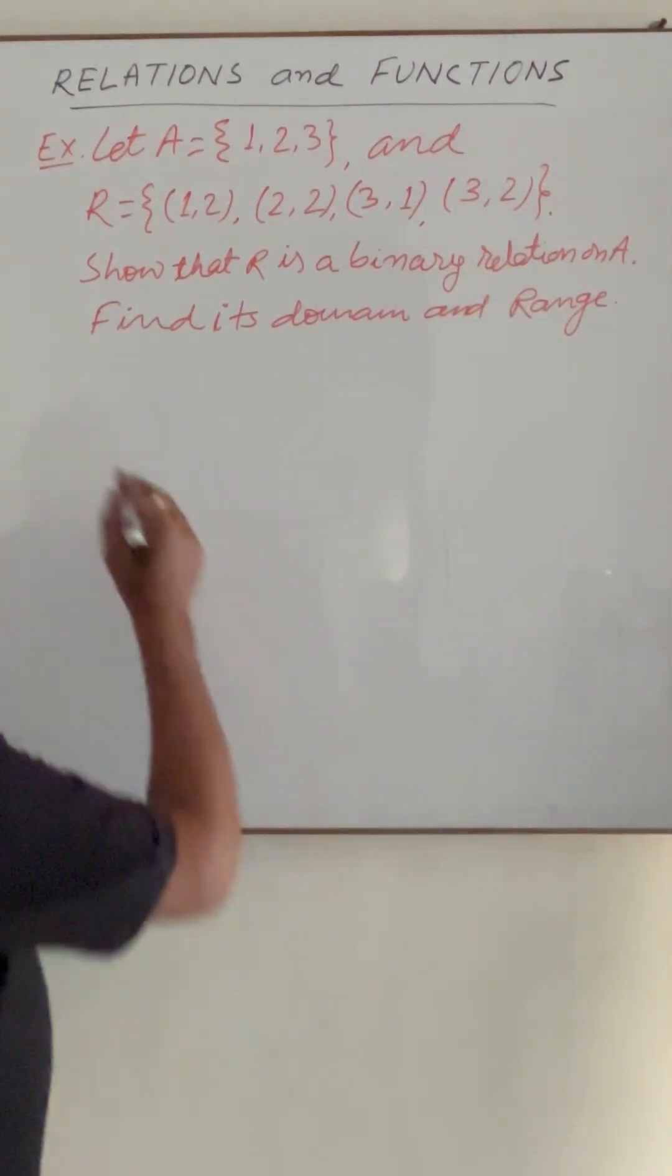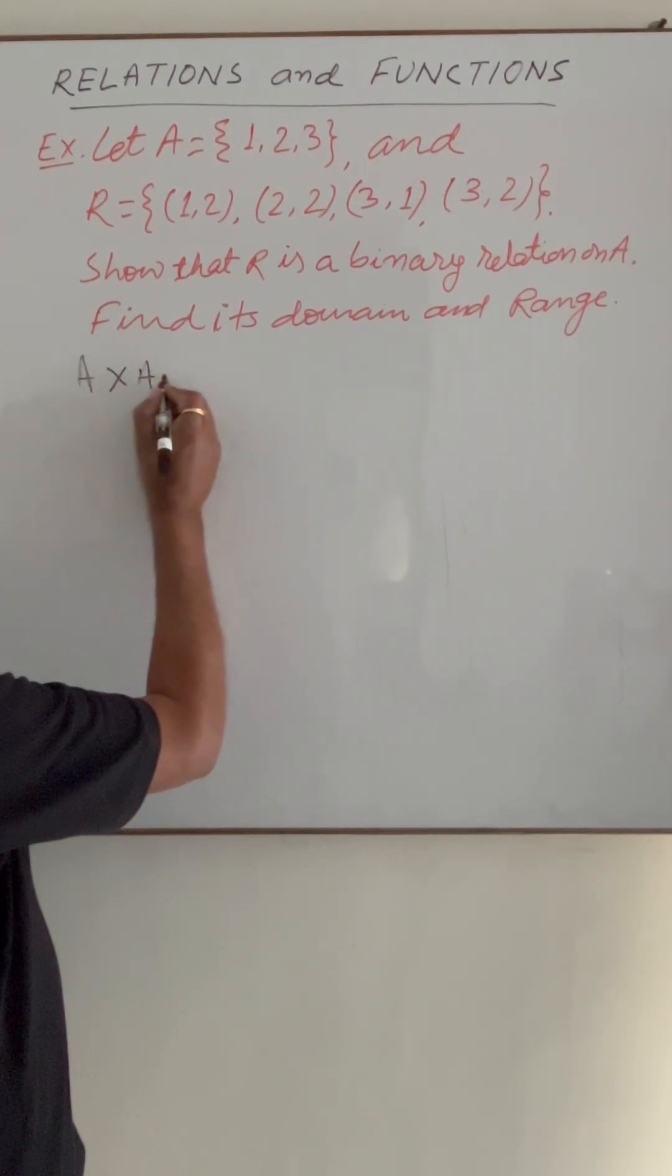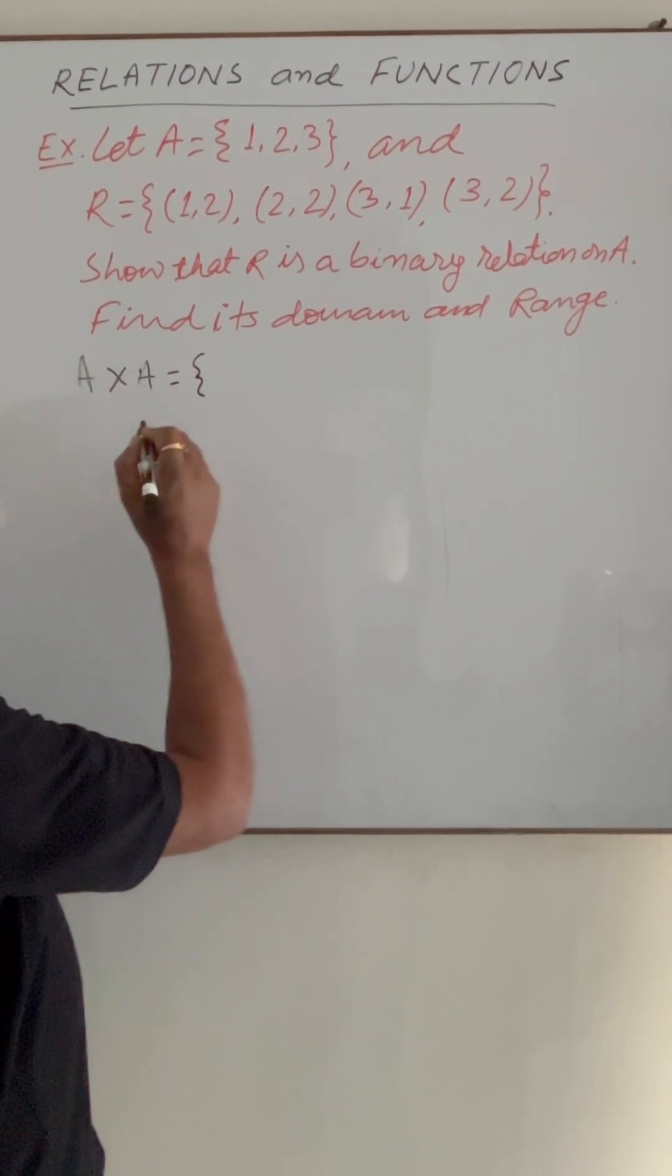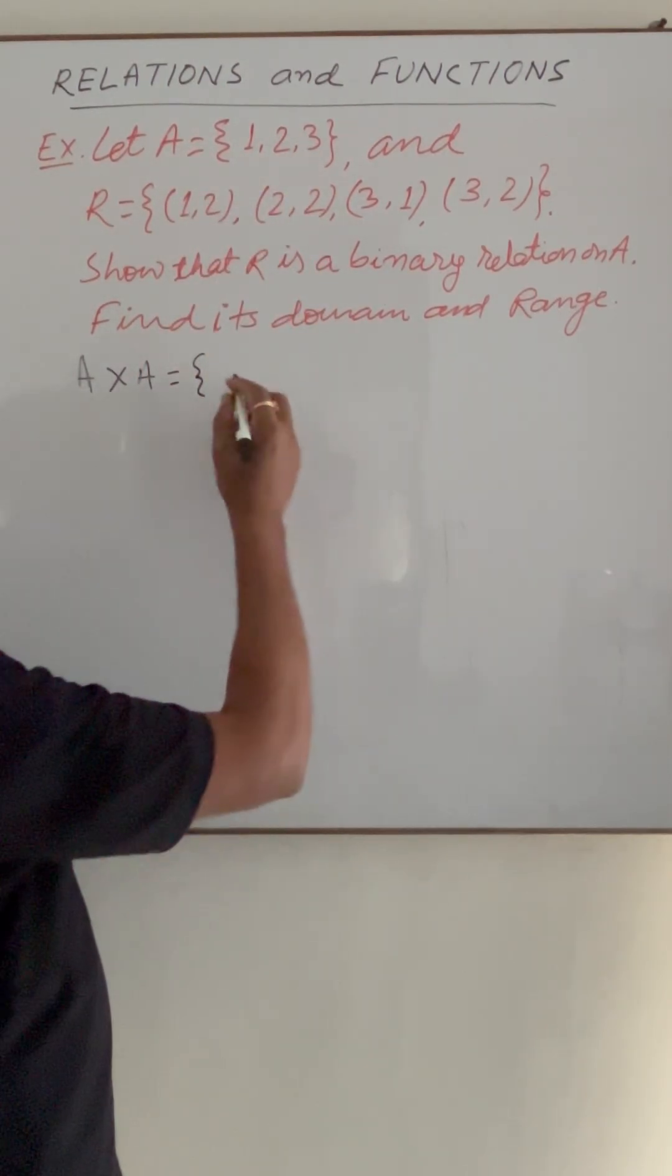Very interesting question. Here if you find Cartesian product of A with itself, then total 3 elements are here. So 3 into 3, 9 elements will be here.